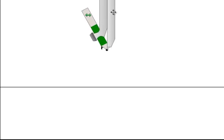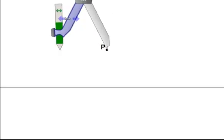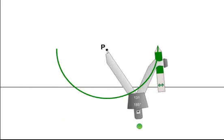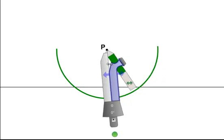Put your compass point on the point P. Open up your compass and make an arc so that it intersects the given line in two different places.